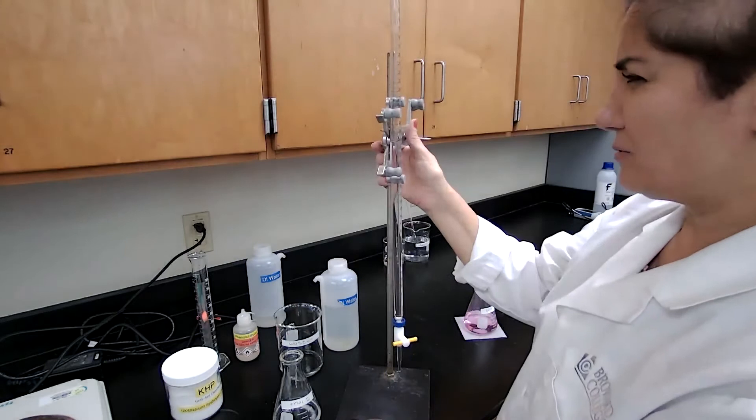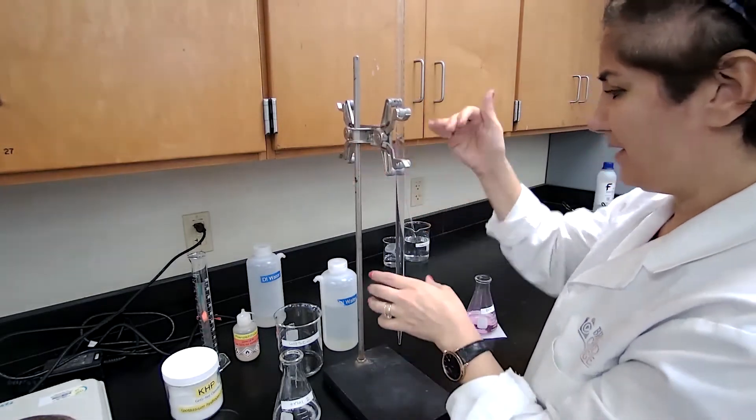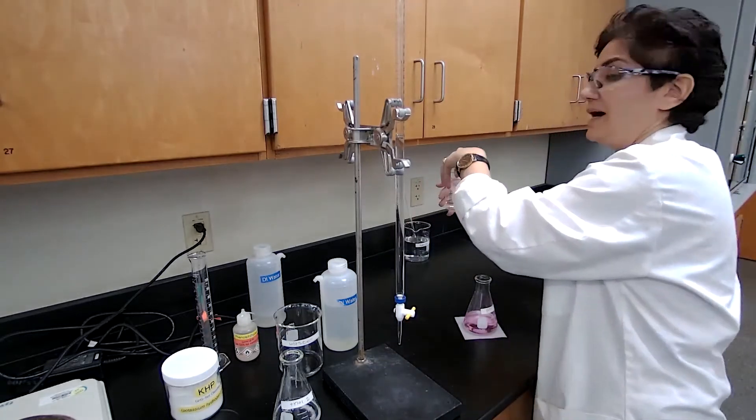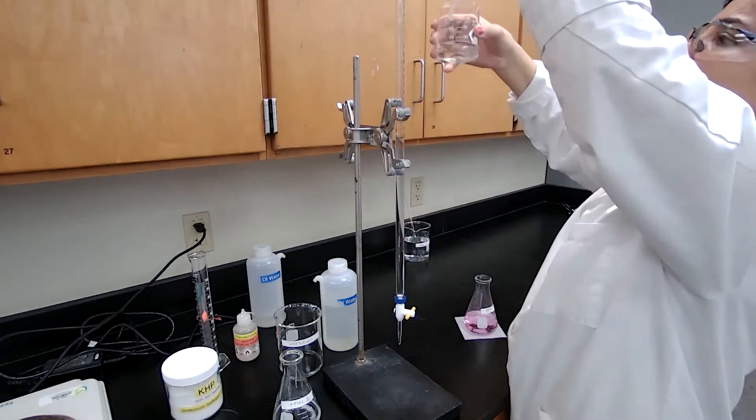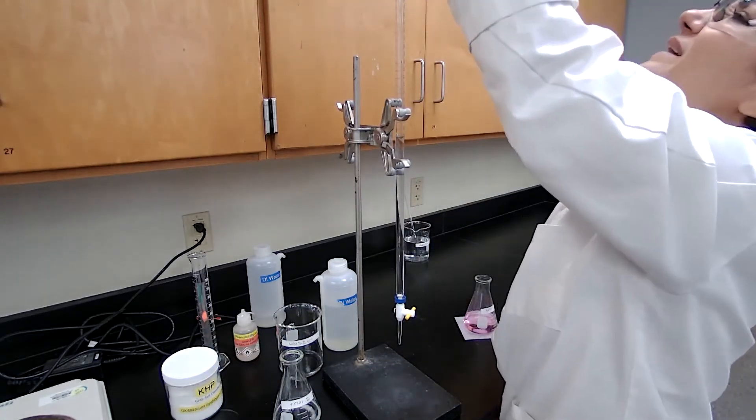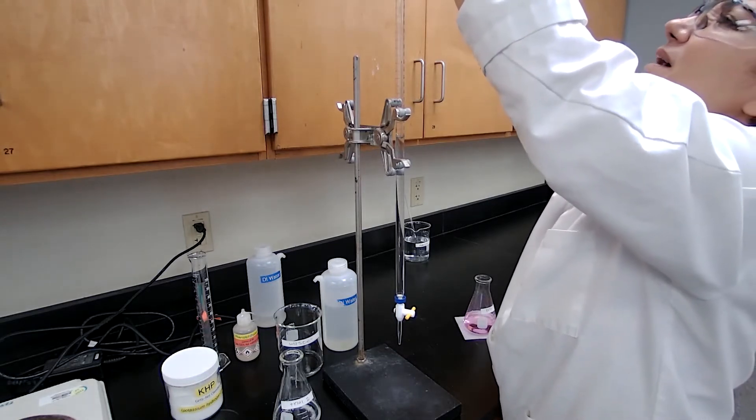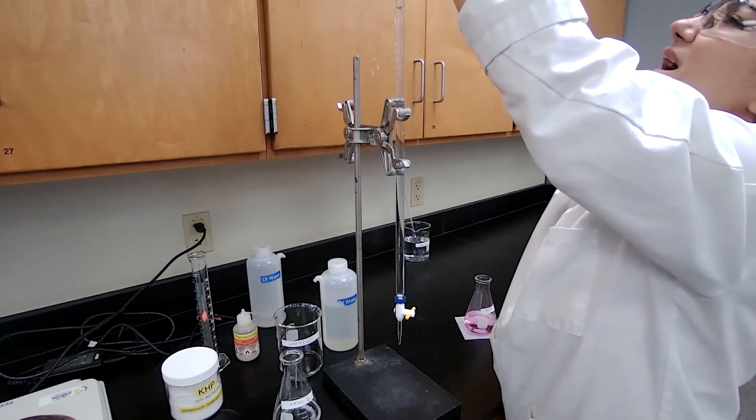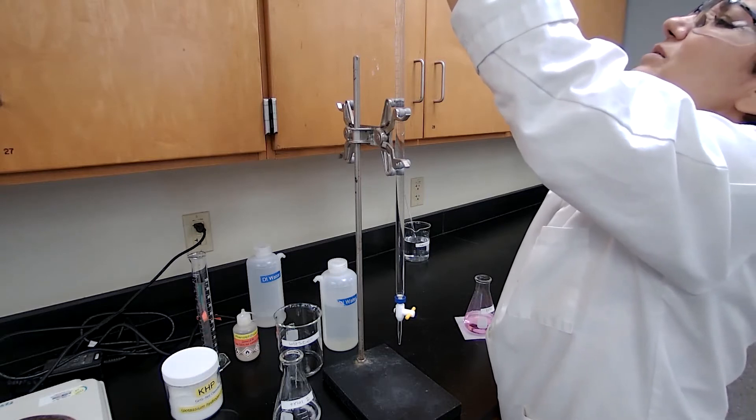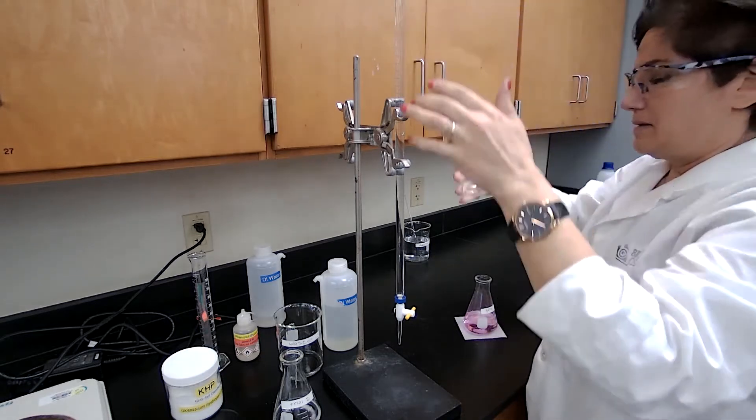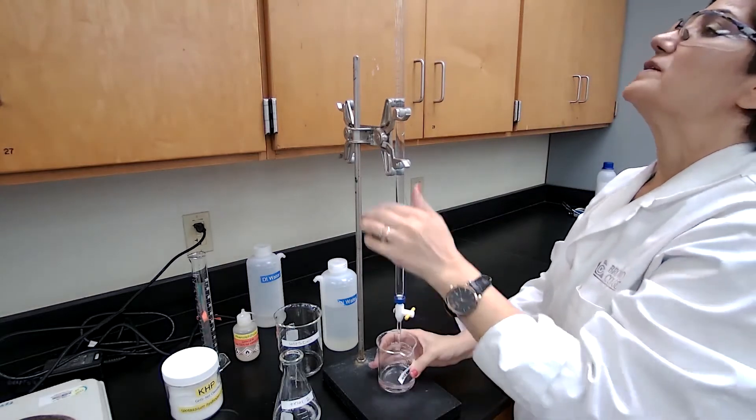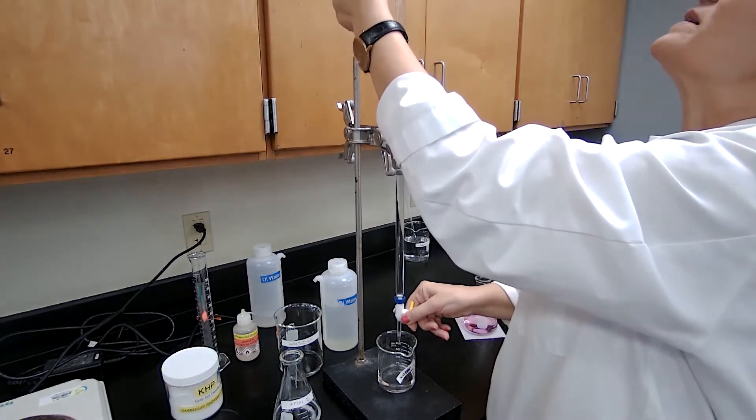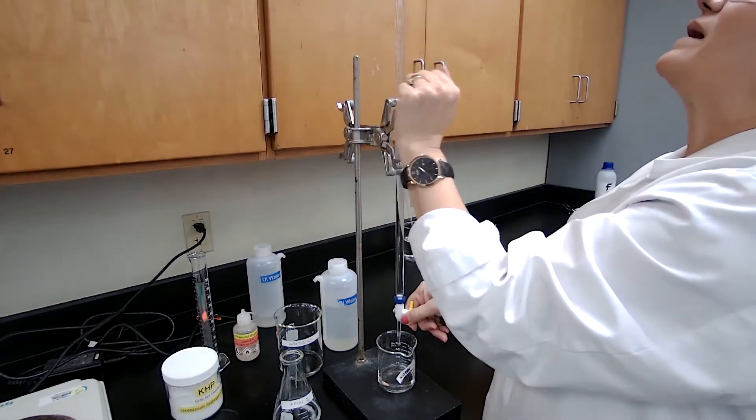For trial two, since I used 30 milliliters, I don't have enough of the sodium hydroxide in the burette. I need to refill it. But I don't have to go to zero. I can refill it to any number, as long as I make sure that I have about 30 milliliters or more in the burette. So I'm going to adjust this time at 10. The meniscus would be at 10 exactly.